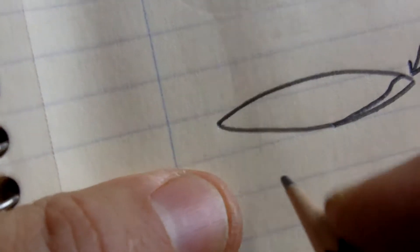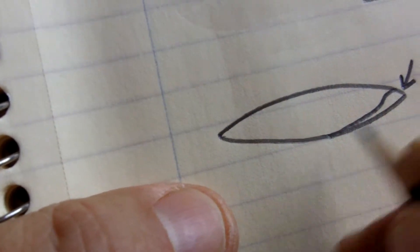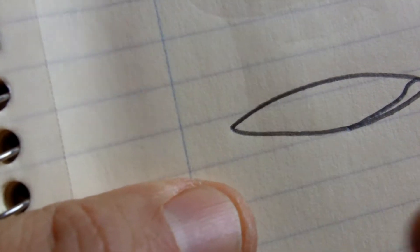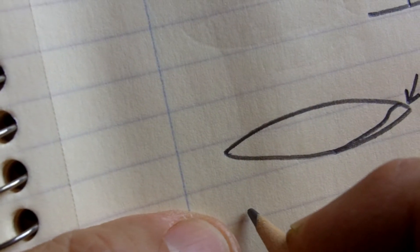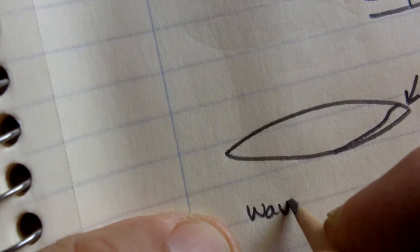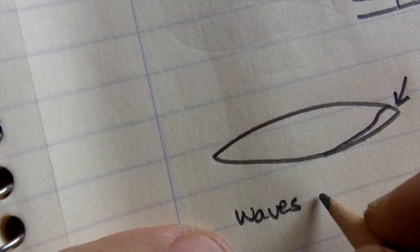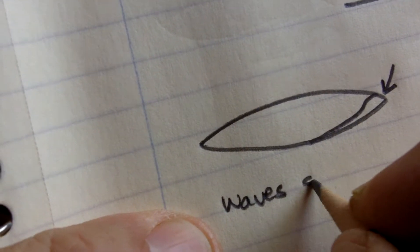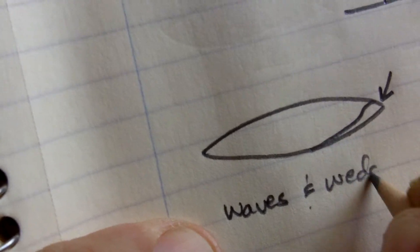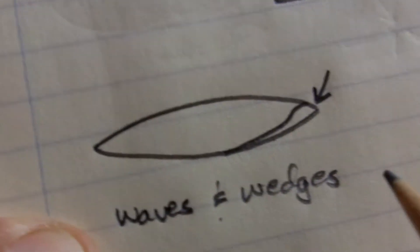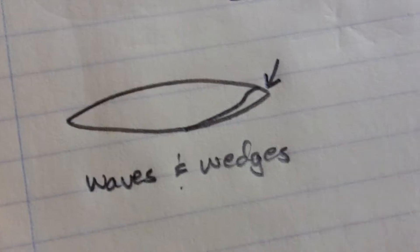Now, there's two words that I use to help me, in my own mind, explain what's happening. I like using the terms waves and wedges to explain fracturing in flint and other nappable materials.